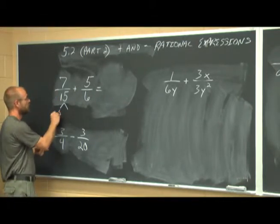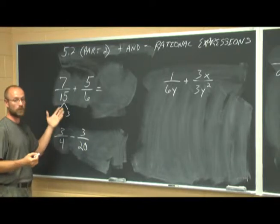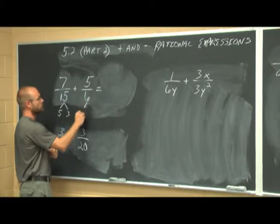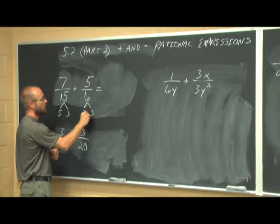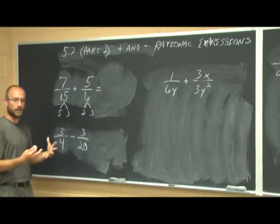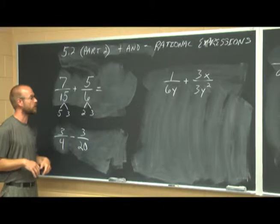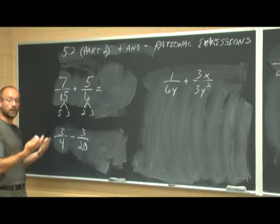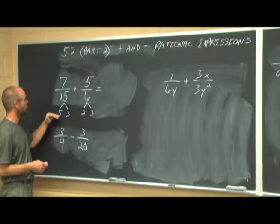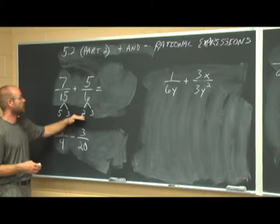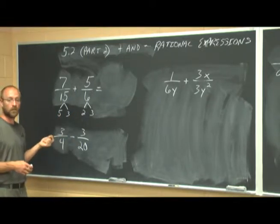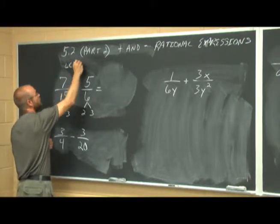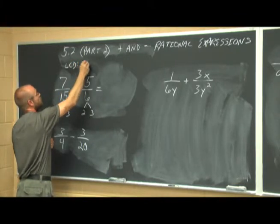15 factors to 5 times 3, because 5 times 3 is 15 — those are the prime factors of 15. We can do the same thing to 6, which gives us 2 times 3. Now, if we want to determine the LCD, as defined in the last video, we need all the factors to their highest powers. We have 5 and 3 from the first, and 2 from the second. So I need 5, 3, and 2. Multiplying those together, my LCD is 5 times 2 times 3, which is 30.